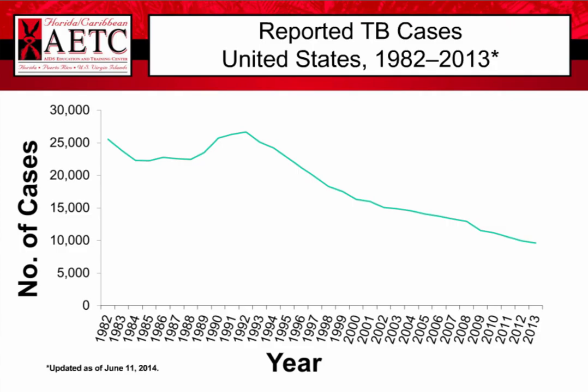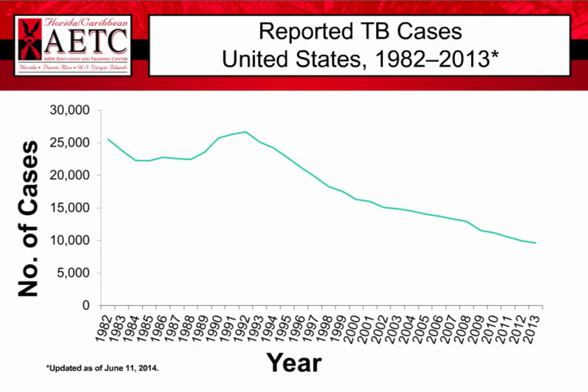For tuberculosis in the United States, the total number of cases has been decreasing, which is positive news. However, we are reaching a plateau — the rate of decrease has been slowing down. With current resources, we are reaching a limit in how much we can diagnose and treat. We definitely need new diagnostic tools and better medications to further decrease cases.